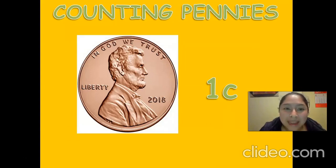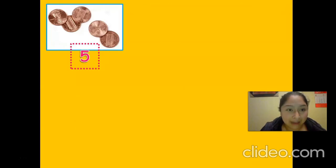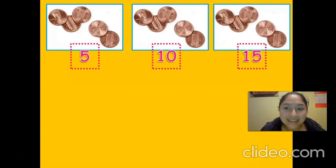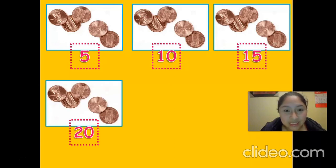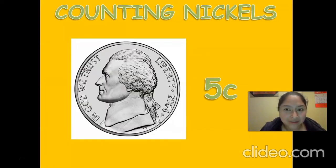Let's go with pennies. We can count pennies. We know that a penny is worth one cent. So we can count pennies by fives. I have five pennies. And what about having more? Here: 10, 15, 20, 25 cents.